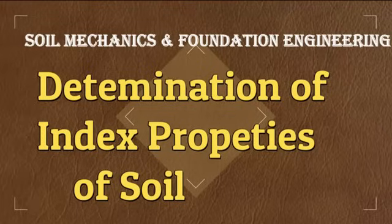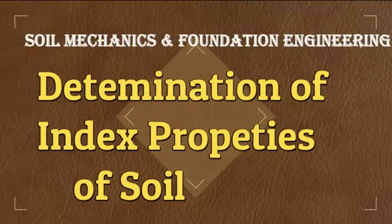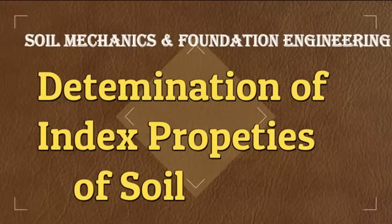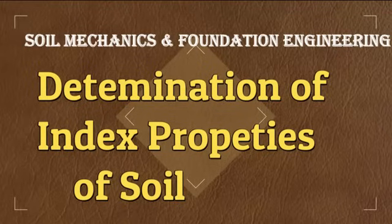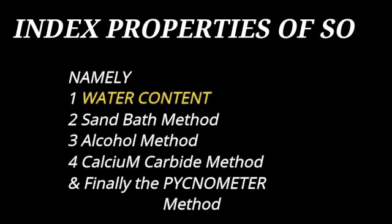We will be discussing only the method that you have been using, but I'll give you an outline of the other methods so you know about it in a better way. There are totally about five types of methods for determining the index properties of soil: water content procedure using the oven drying method, sand bath method, alcoholic method, calcium carbide method, and finally the pycnometer method.